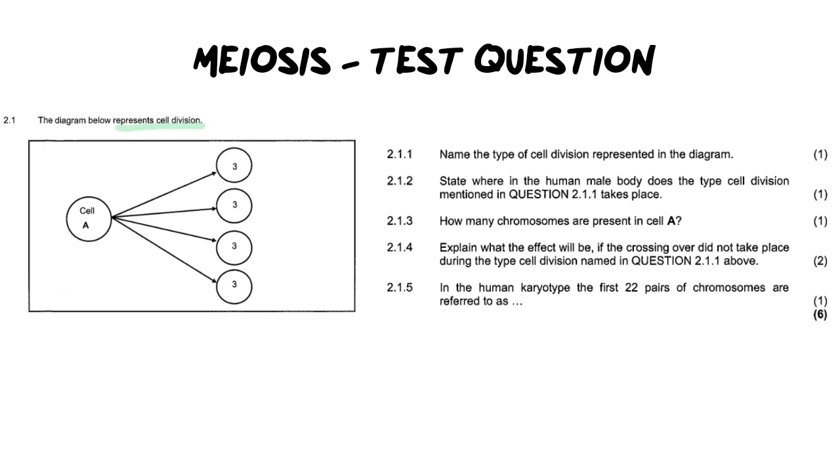The other pieces of information is that they simply say that there is one cell labeled A and that we have four cells with three chromosomes each. Now this is an important detail. They are telling you that one cell is becoming four. This is very important. It's going to tell us what kind of cell division we're doing which in this case is meiosis and this is going to help us answer one of our questions as you'll see next.